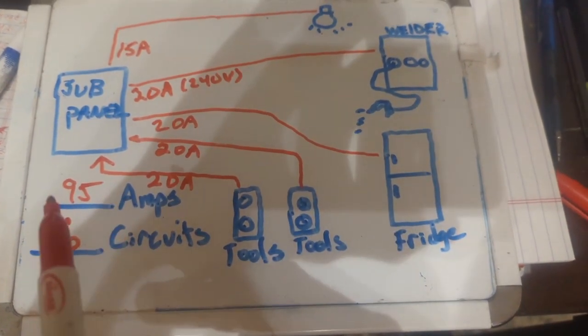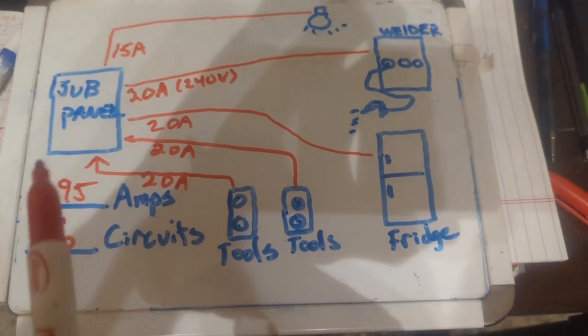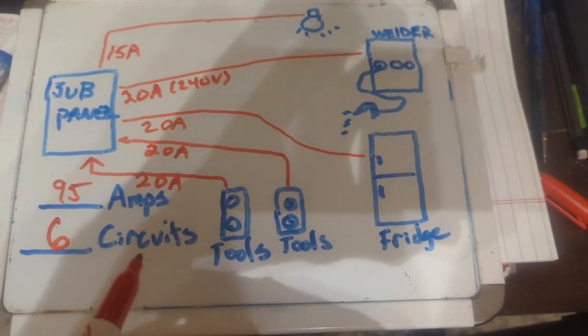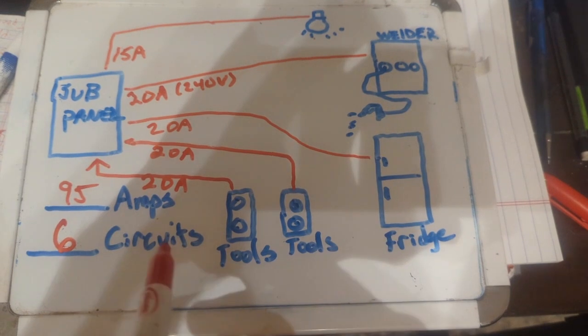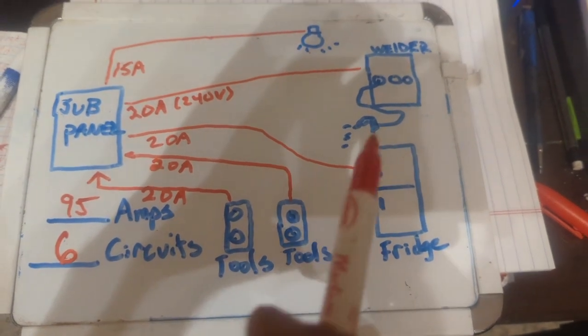So in this situation here, I'm going to say I'm going to go with a hundred amp box and hope that I don't have to add anymore and I'm going to need six circuits in there. So that's what I'm going to be looking at for this. So that's how you determine the box.